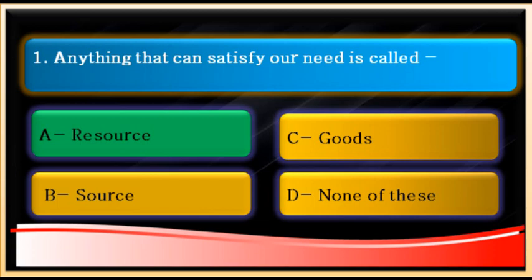The useful things are called resources — all those things which we use in our daily lives and which are essential for human survival. Can you give me examples of resources? Water is a resource because it quenches our thirst. Trees are resources because they give us oxygen and different products. Soil is a resource because it helps in cultivating crops.